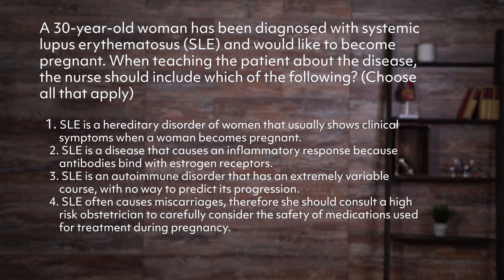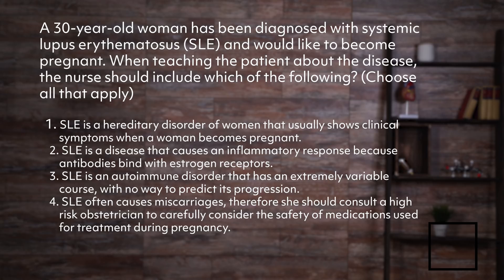Let's go over a few questions to review. A 30-year-old woman has been diagnosed with systemic lupus erythematosus, SLE, and would like to become pregnant. When teaching the patient about the disease, the nurse should include which of the following? Choose all that apply. Number one: SLE is a hereditary disorder of women that usually shows clinical symptoms when a woman becomes pregnant. Number two: SLE is a disease that causes an inflammatory response because antibodies bind with estrogen receptors. Number three: SLE is an autoimmune disorder that has an extremely variable course with no way to predict its progression. Number four: SLE often causes miscarriages; therefore, she should consult a high-risk obstetrician to carefully consider the safety of medications used for treatment during pregnancy.